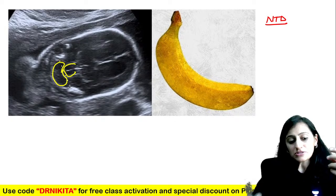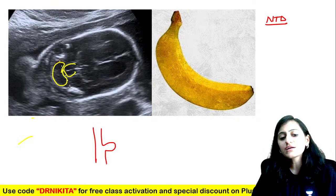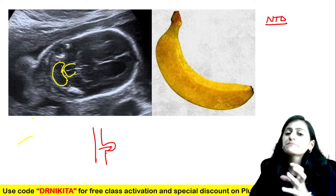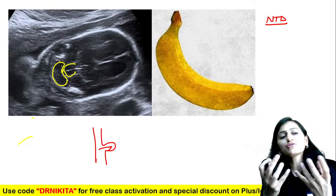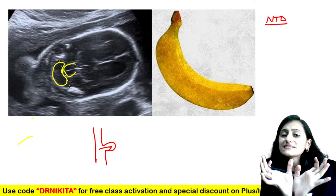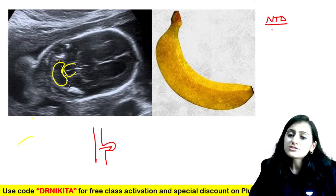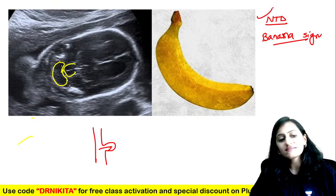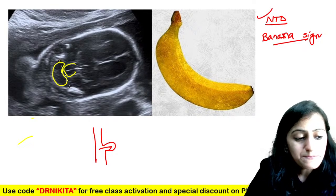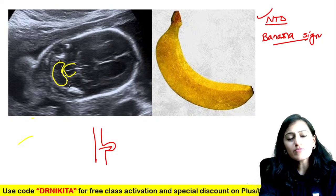Why does the banana sign occur? If there is a neural tube defect with contents herniating, it causes a pull on the brain. Brain structures come down, the posterior fossa becomes crowded, and the cerebellum is congested in a small space — it tries to fit by curving around the brain stem, giving the banana sign. This is seen with neural tube defects.